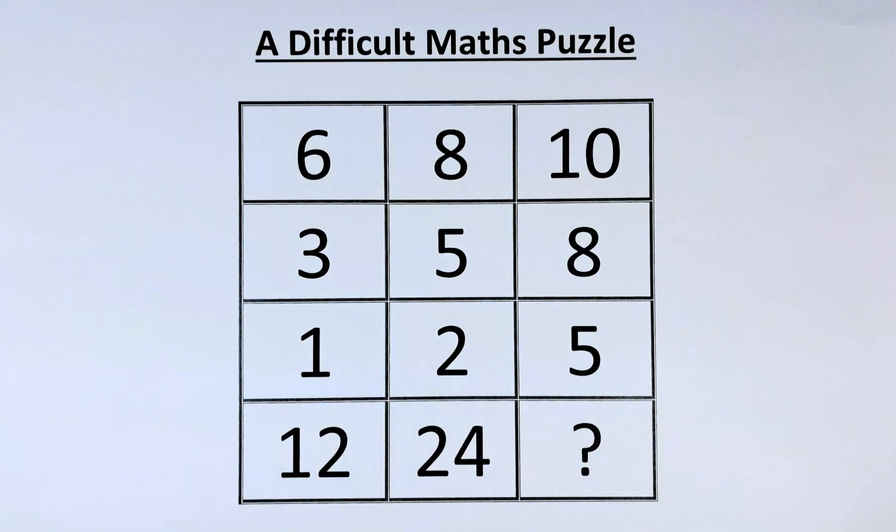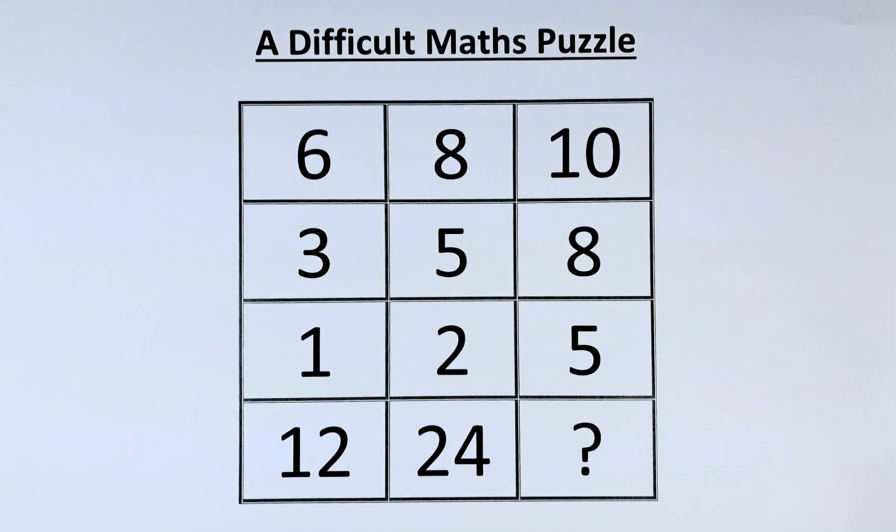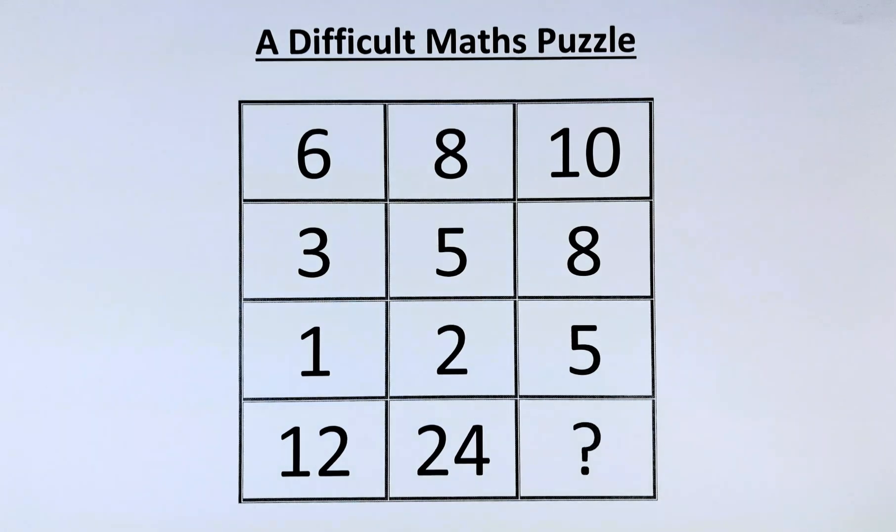The numbers in the puzzle are as follows. In the first row, we have 6, 8, 10. In the second row, we have 3, 5, and 8. And in the third row, we have 1, 2, and 5. In the final row, we have 12, 24, and a question mark.